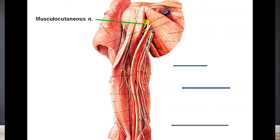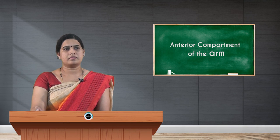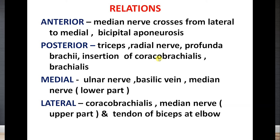The musculocutaneous nerve is the nerve of the compartment. The median nerve passes in this compartment but does not give any branches in the arm. The ulnar nerve is also seen in the front of the arm but gives no branches here. You can see the brachial artery and the median nerve crossing from lateral to medial side in front of the brachial artery. The relations of the brachial artery: anteriorly is the median nerve crossing lateral to medial; posteriorly are the posterior compartment muscles; medially is the ulnar nerve, basilic vein, and median nerve — median nerve is medial in the lower part and lateral in the upper part.